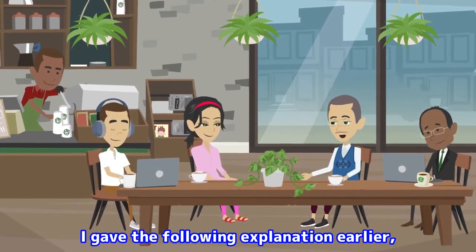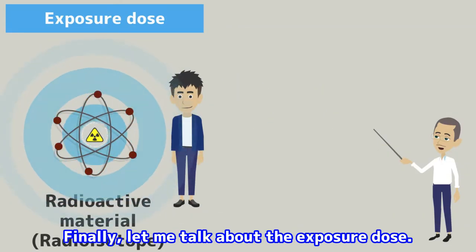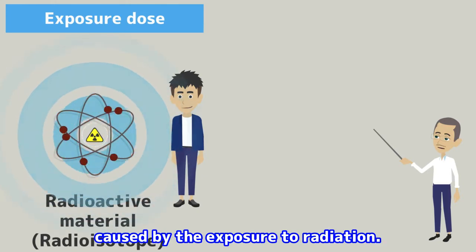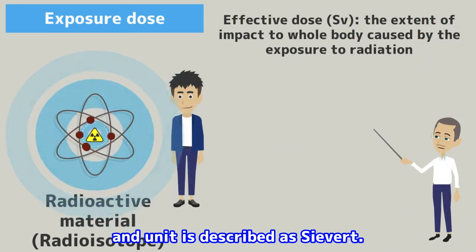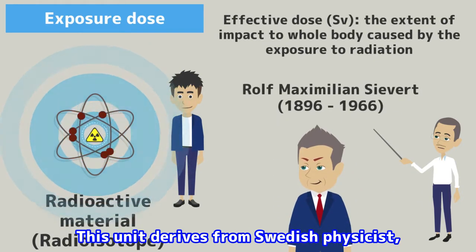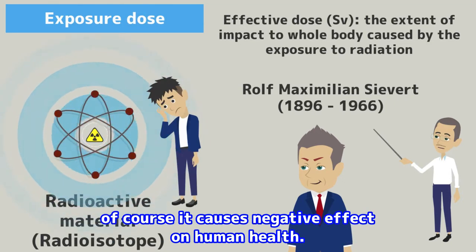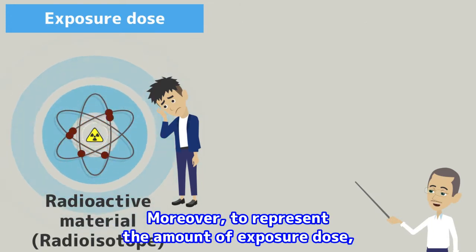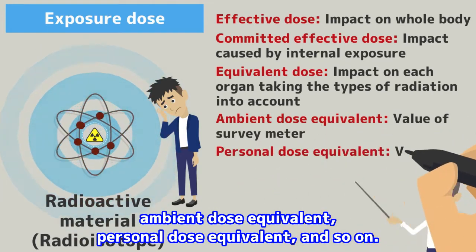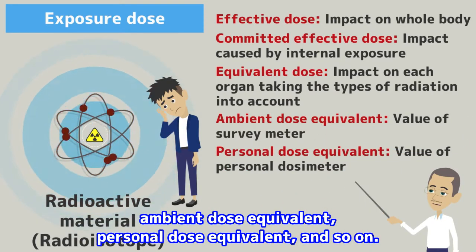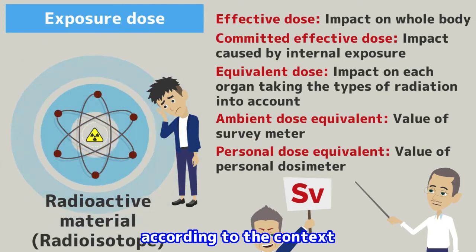Do you remember that I gave the following explanation earlier regarding the unit sievert? Let me talk about the exposure dose. This is the extent of actual impact caused by the exposure to radiation. For example, the extent of impact to whole body is called the effective dose, and the unit is described as sievert. This unit derives from Swedish physicist Rolf Maximilian Sievert. If the exposure dose gets too high, of course it causes negative effect on human health. Moreover, to represent the amount of exposure dose, there are a lot of indices — for example, effective dose, committed effective dose, equivalent dose, ambient dose equivalent, personal dose equivalent, and so on. These indices, however, have the same unit, sievert. So let's choose the correct indices according to the context which we would like to use.